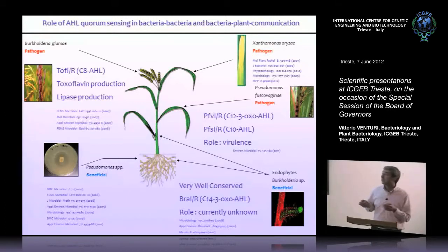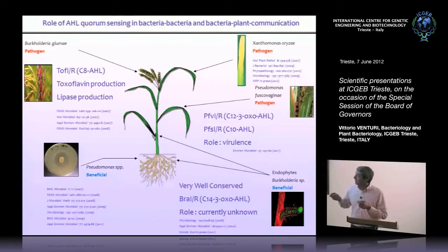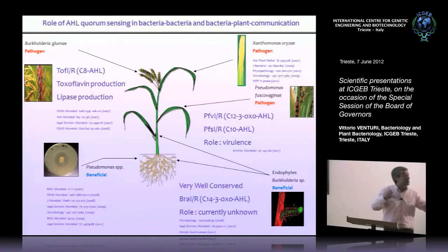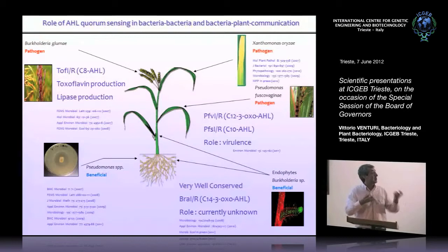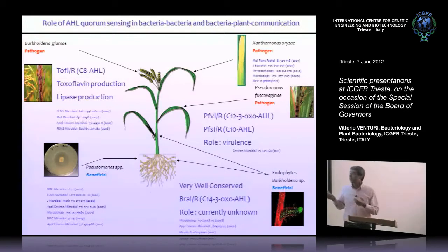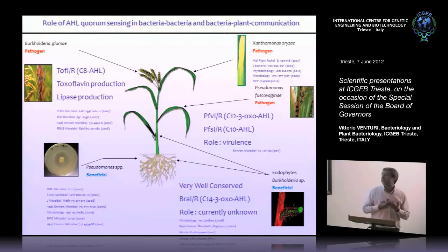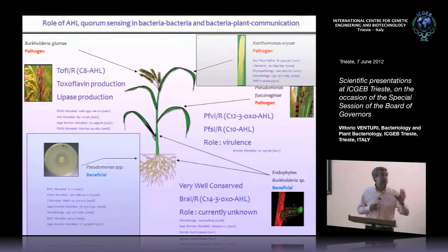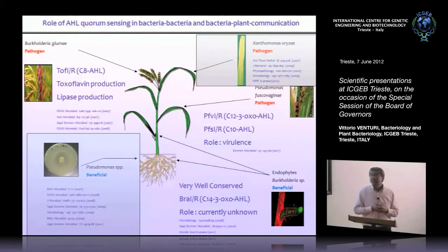Some of these beneficial bacteria are endophytes that live inside the plant, and some live in close proximity to the roots. We asked ourselves: do these bacteria communicate? Is communication important? Could it be a way to improve outcomes with beneficial bacteria or block pathogenic ones? We have a lot of data showing that communication is crucial for all these interactions between bacteria and rice. In the next few minutes I'll give you some interesting and perhaps novel examples that we found.